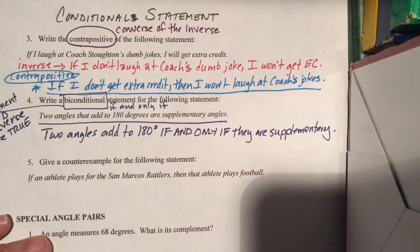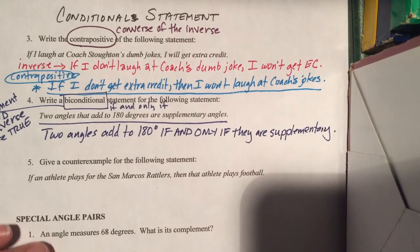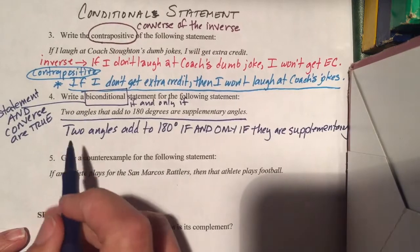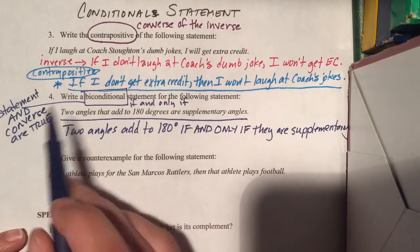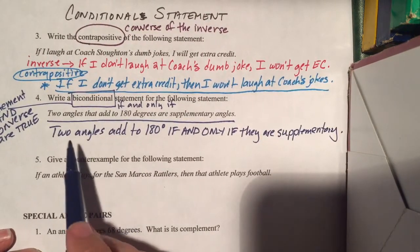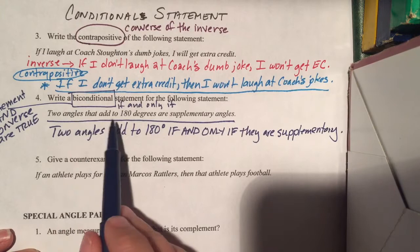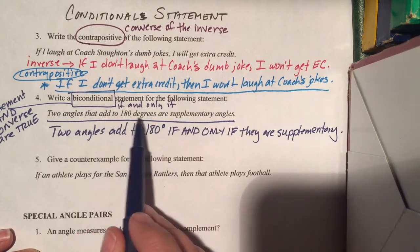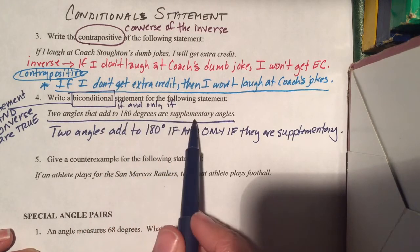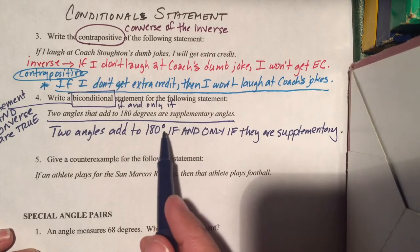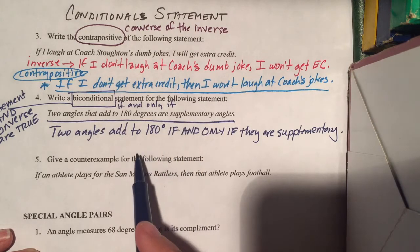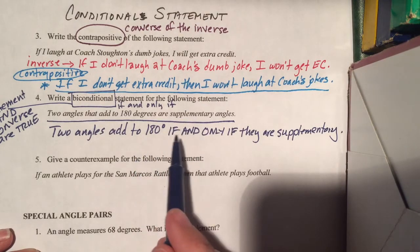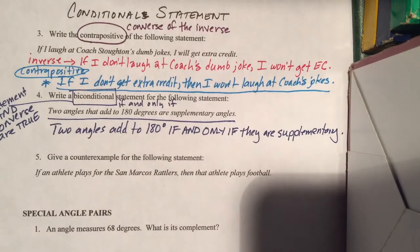That is your biconditional. It's a biconditional because it's true both ways — the statement and the converse are both true. If two angles add to 180, then they're supplementary — that's true. And if angles are supplementary, then they're two angles that add to 180 — that's also true. That's why we can write the biconditional.